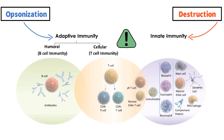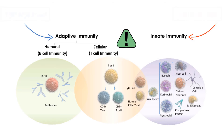Therefore, both branches of the immune system must work together for a complete immune response to infection. Further detail on this phagocytic process is provided in the video on this channel on inflammation.